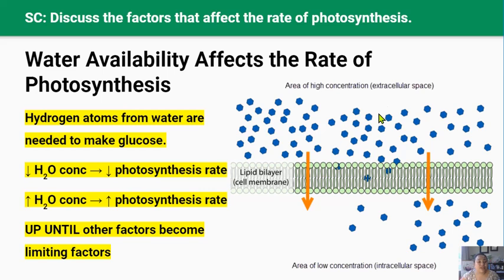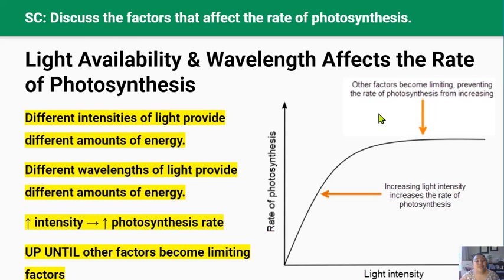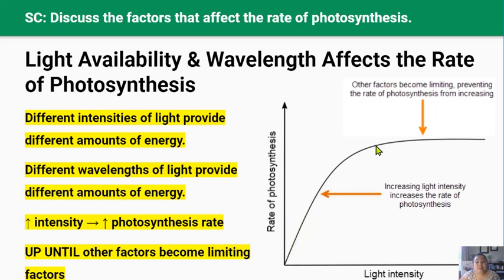As the amount of water in the soil increases, the rate of photosynthesis will increase to a certain point, but after that a further increase in water won't increase photosynthesis because other factors like light availability will become limiting. Increasing light intensity also increases the rate of photosynthesis to a maximum point, above which further increases in light intensity will have no effect as other factors like temperature or the concentration of chlorophyll molecules become limiting. It's also important to note that different wavelengths of light provide different amounts of energy.